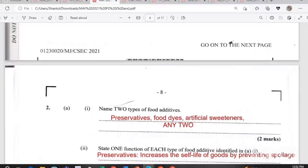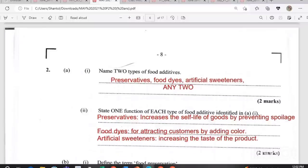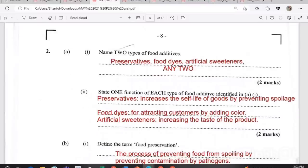State one function of each type of food additive identified in the above question. I have preservatives, and from the term preservatives, you know it increases the shelf life of goods by preventing spoilage. Food dyes, it is for attracting customers by adding color. Artificial sweeteners, it increases the taste of the product. You may have strawberry jam that naturally would not be as sweet, but to appeal to customers, additional sugar is added to increase or improve the taste. That's two marks.